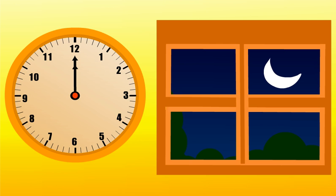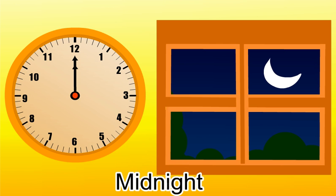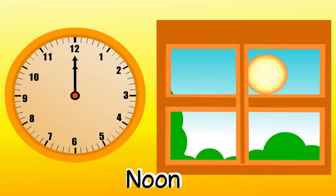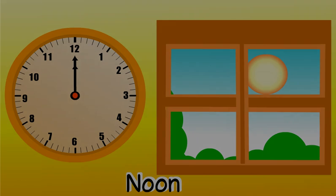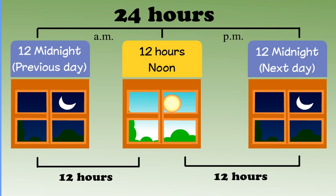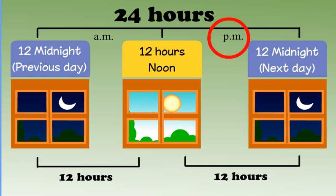12 o'clock at night is called midnight because it's in the middle of the night. 12 o'clock during the day is called noon. Time between 12 midnight and 12 noon is denoted by AM. Time between 12 noon and 12 midnight is denoted by PM.